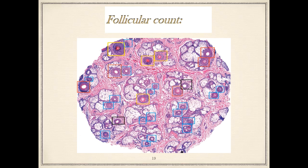This microphotograph shows follicular count in advanced androgenetic alopecia: approximately 14 follicular units, follicular density of 27, terminal anagen 5 (red boxes), terminal telogen 4 (yellow boxes), vellus anagen 16 and vellus telogen 2 (teal boxes). Intermediate follicles shown by black boxes are not included in the count. The terminal-to-vellus ratio is 9 divided by 18, giving 0.5:1, confirming advanced androgenetic alopecia.